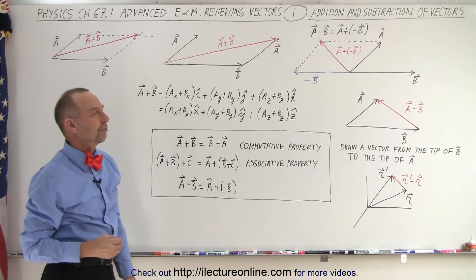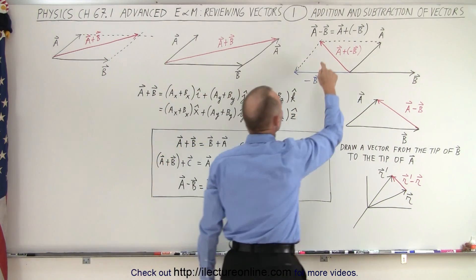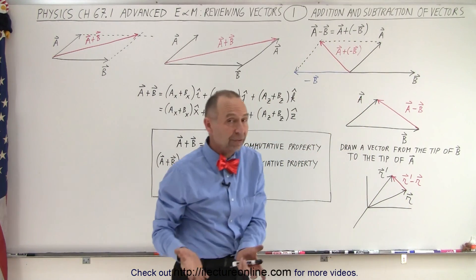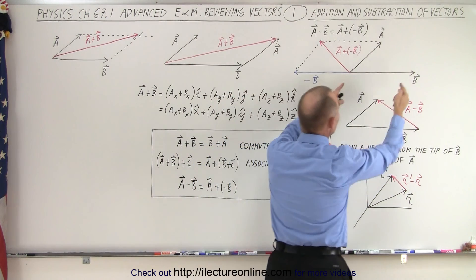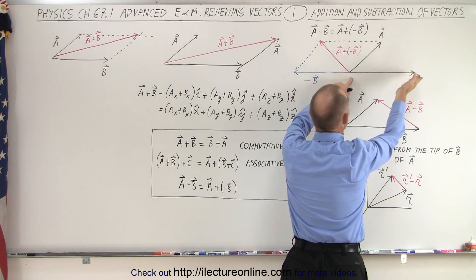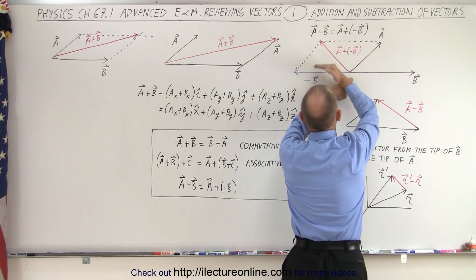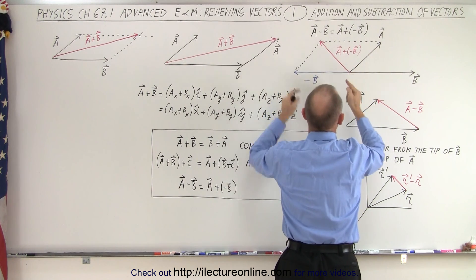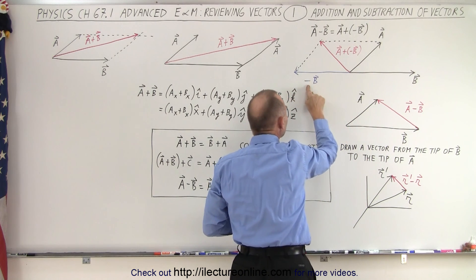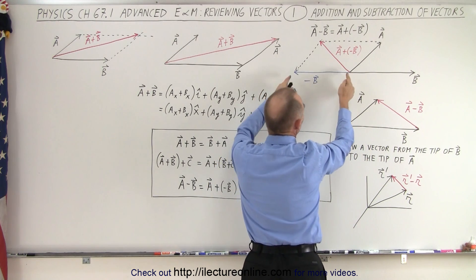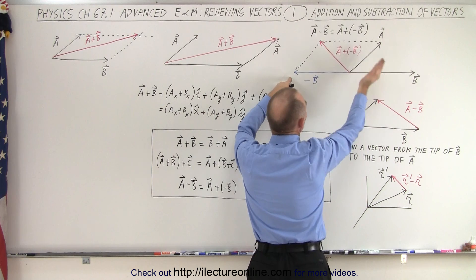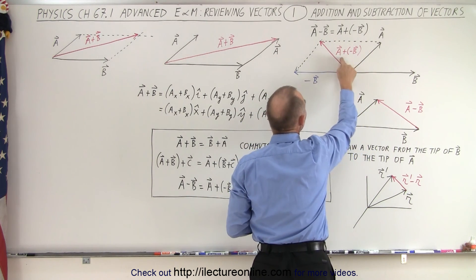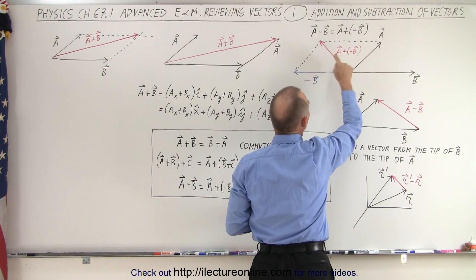What if we want to subtract a vector — A minus B? Subtracting vectors is the same as adding the negative of a vector. The negative of a vector is simply the same vector turned around, or rotated 180 degrees in direction. So we flip the vector, pointing in the opposite direction — as long as it has the same length, this becomes the negative of vector B. Same length, but pointing in the opposite direction. When we add the negative B to A, that's the same as subtracting B from A.